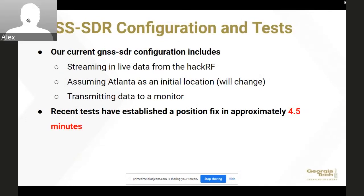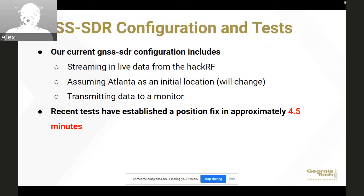In our current configuration, we're streaming live data from the antenna and HackRF directly to the system running GNSS SDR — the same setup as in orbit. We're assuming a known starting location to speed up the initial position fix. When in orbit, we'll make an initial guess based on orbital elements and launch vehicle data to make the fix as efficient as possible. Data is currently being transmitted to a monitor for debugging, but that will be turned off in orbit to save power. In our recent tests in Harrison Square, we achieved a position fix in 4.5 minutes, which is honestly pretty good. We believe that number will improve in orbit due to less interference from the atmosphere, clouds, and obstructions, and because of more direct lines of sight to satellites from above the atmosphere.